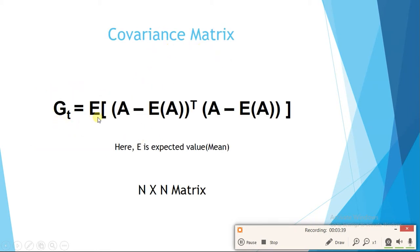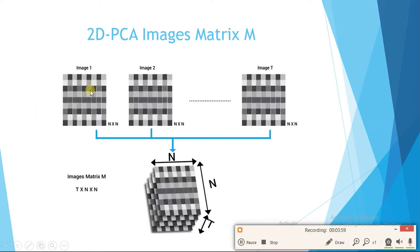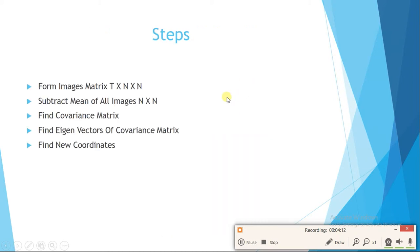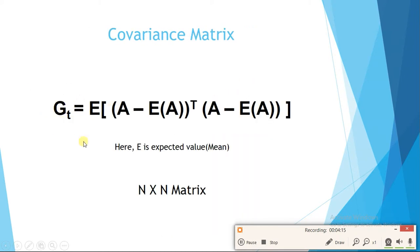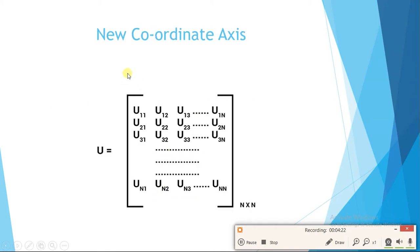We compute the covariance matrix as the sum over all t images of (image minus mean of all images) multiplied by its transpose times (image minus mean of all images). Here E is the expected value or mean. The covariance matrix will be n×n, so we find eigenvectors of this n×n matrix, which are also n×n — these are the new coordinate axes.